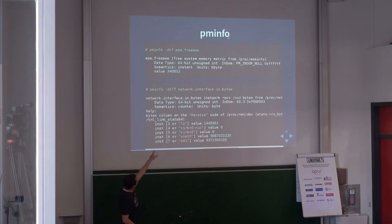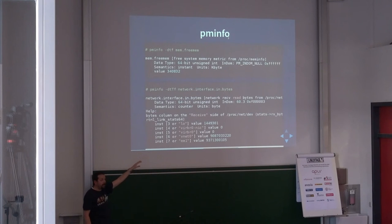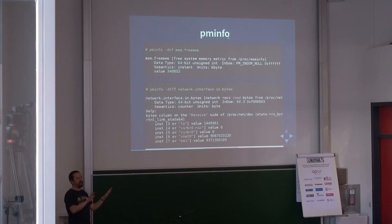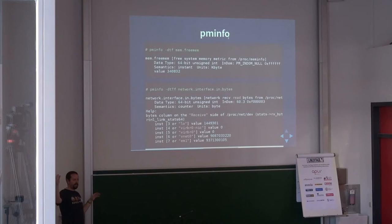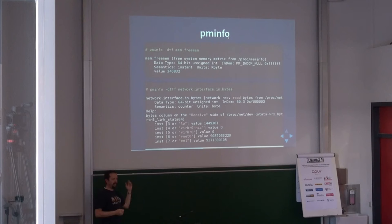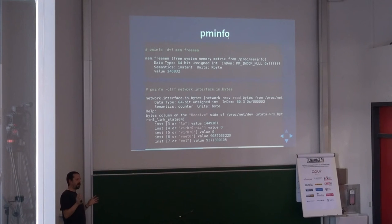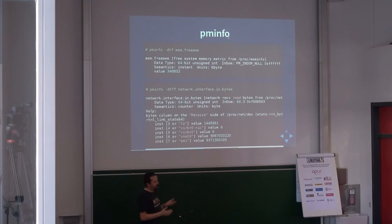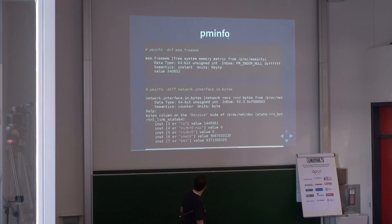What's nice is the extended help that tells you where this metric was fetched from, because it's not entirely easy. If you take two monitoring systems, one says CPU is 90% and the other says 95% at the exact same time, and you start wondering whether it's the same value and where it's taken from. You could figure it out by looking at source code, but it's quite a bit of work.